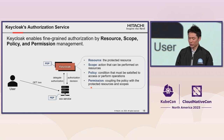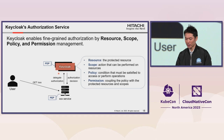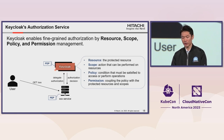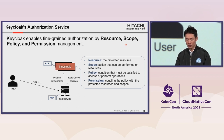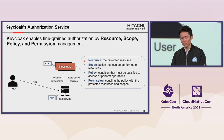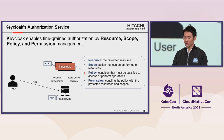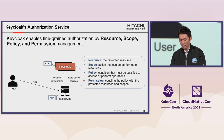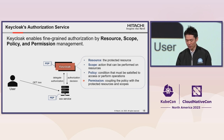Keycloak's authorization service allows us to centralize authorization data to Keycloak and eliminate storage of duplicate authorization data across multiple services. Keycloak enables fine-grained authorization through resource, scope, policy, and permission management, all configurable via the Keycloak GUI. A resource is a protected resource that needs to be authorized. Scope is an action that can be performed on resources. Policy is a condition that must be satisfied to access or perform operations. Permission couples the policy with the protected resources and scopes. Keycloak acts as a PDP and makes authorization decisions using these four types of definitions.